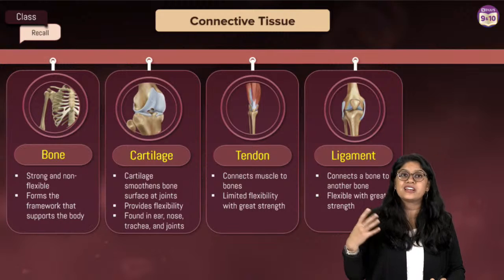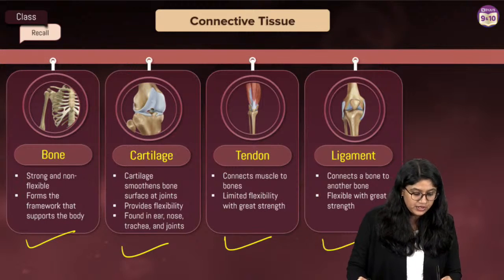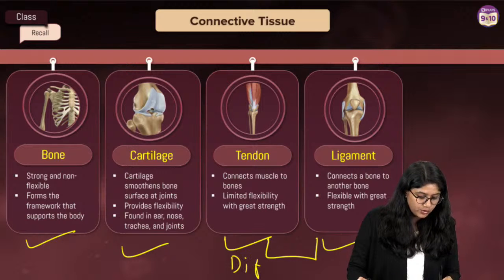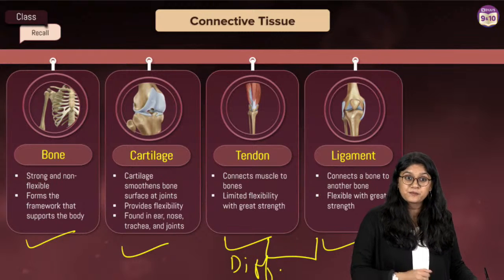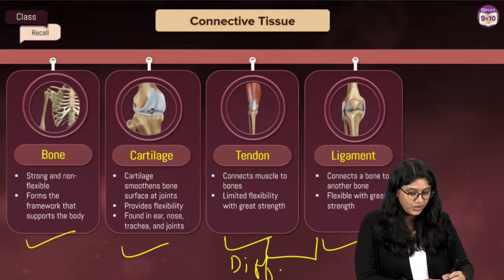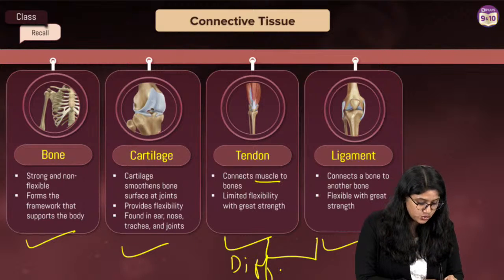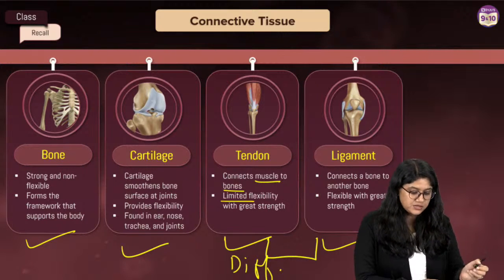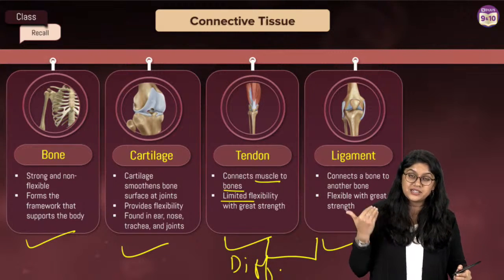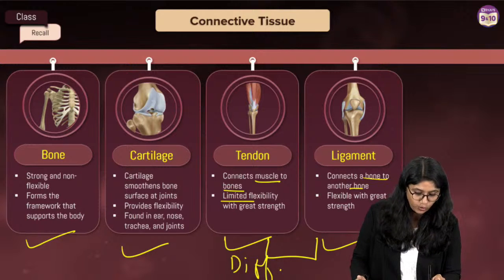We also have different types of connective tissue: bone, cartilage, tendon, and ligament. Tendon connects muscle to bone and limits flexibility with greater strength, whereas ligament connects bone to bone with flexibility and greater strength.